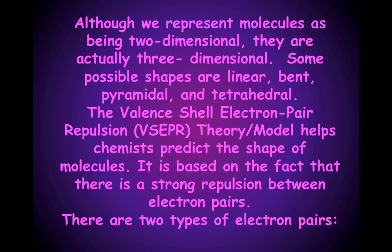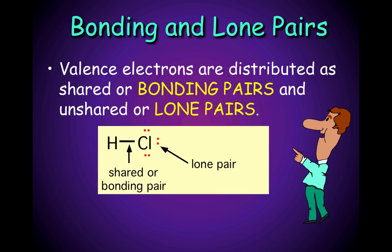This theory is based on the fact that there is a strong repulsion between electron pairs. When writing Lewis structures, we are concerned with two types of electron pairs. The valence electrons can be distributed as shared or bonding pairs of electrons and unshared or lone pairs of electrons. In the HCl molecule, there is one bonding pair of electrons around chlorine and there are three lone pairs of electrons around chlorine.